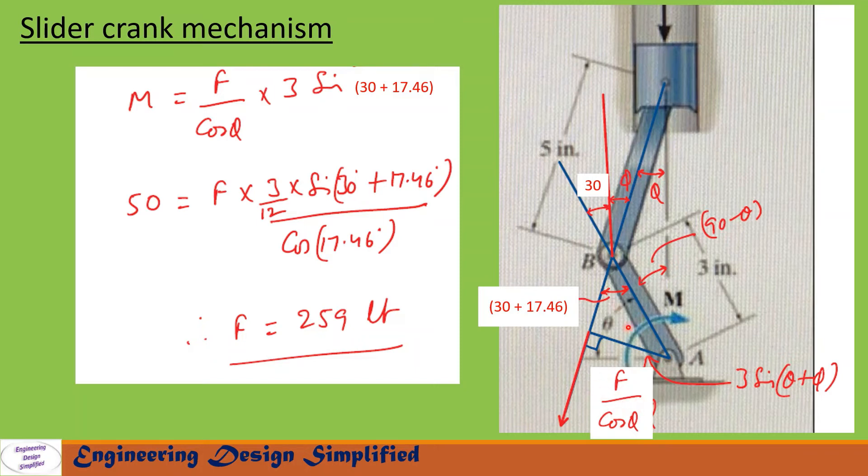Now let us draw a vertical line here from this point B upwards. This line and this line are parallel. Since the angle here is phi, then this angle will also be phi. Let us extend the line along this crank. The angle between vertical and this line will be 30 degrees, that is 90 minus 60.